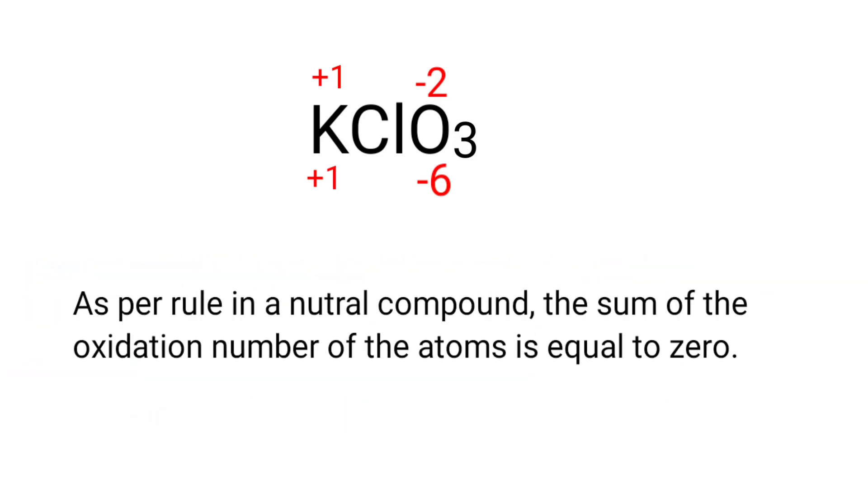As per rule in a neutral compound, the sum of the oxidation number of the atoms is equal to 0. So the numbers along the bottom must add up to 0. So the number under Cl must be plus 5. Therefore, we can write the oxidation number of Chlorine is plus 5.